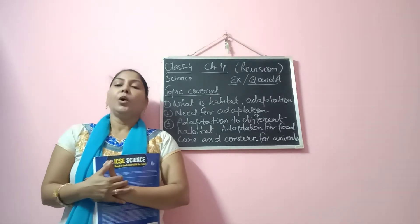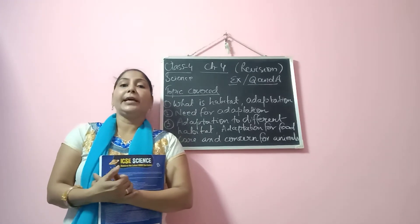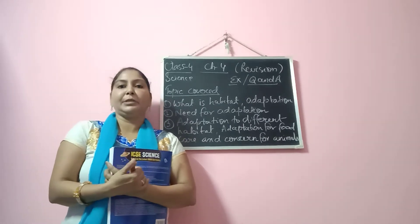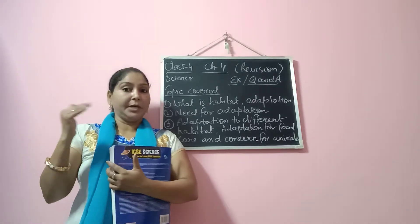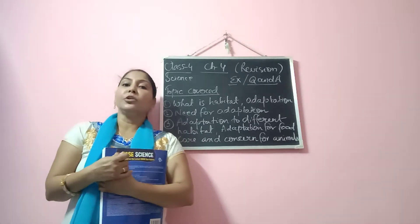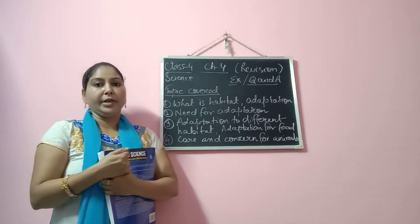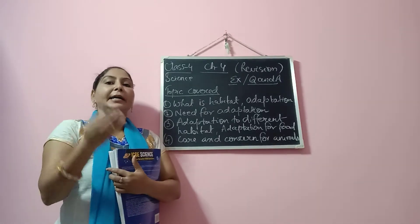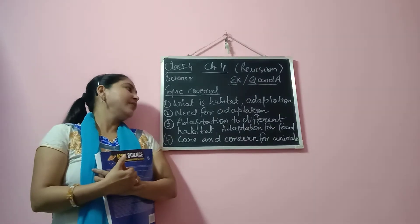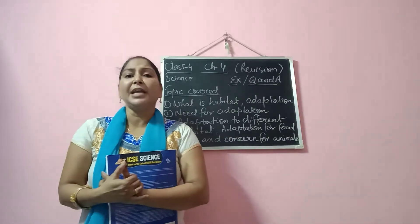In this chapter we have learned: what is habitat, what is adaptation, and what is the need for adaptation. As you have seen in the video, we explained why there is a need for adaptation — in order to survive in a particular habitat, to search for food, shelter, for reproducing young ones, and also for protection. So for all these purposes we need to adapt to a certain environment or habitat.